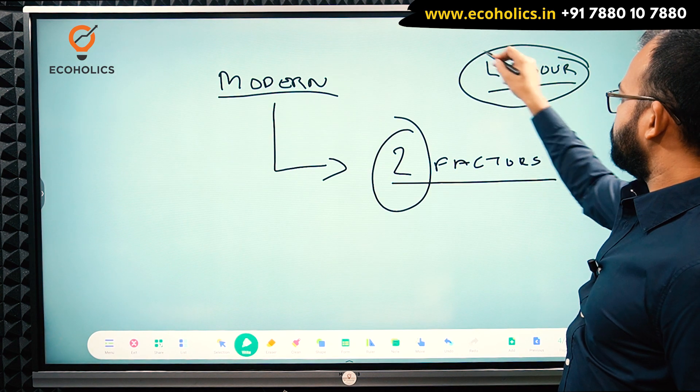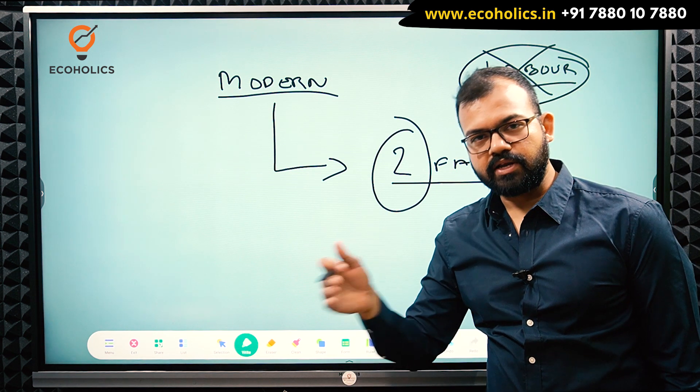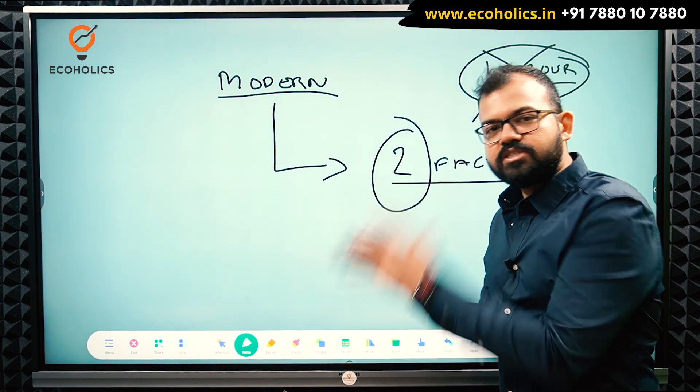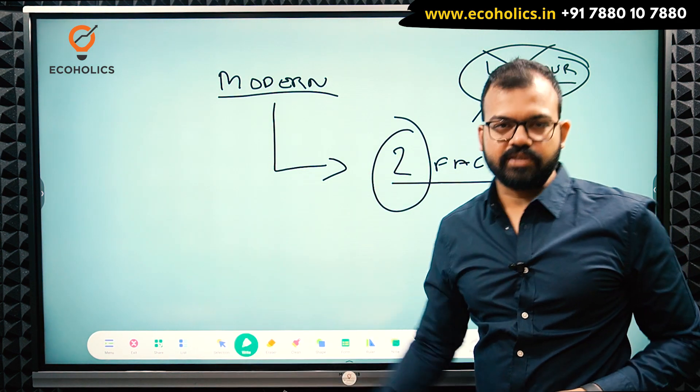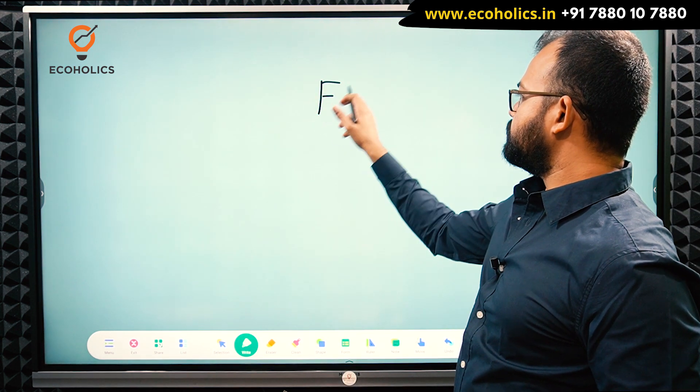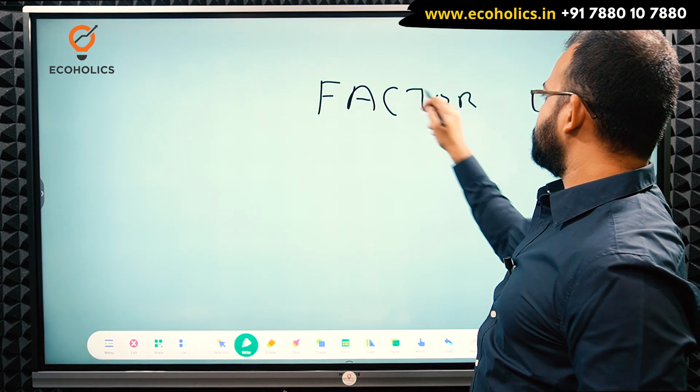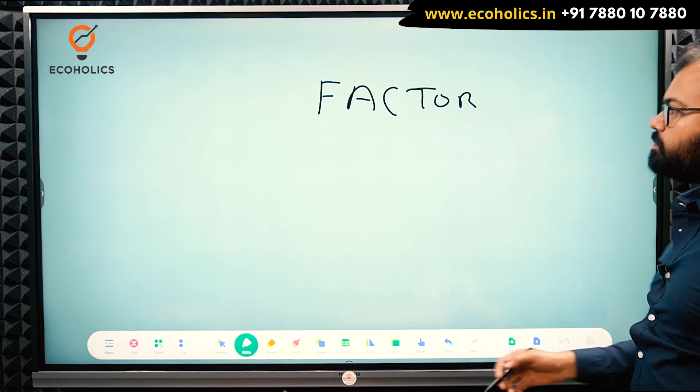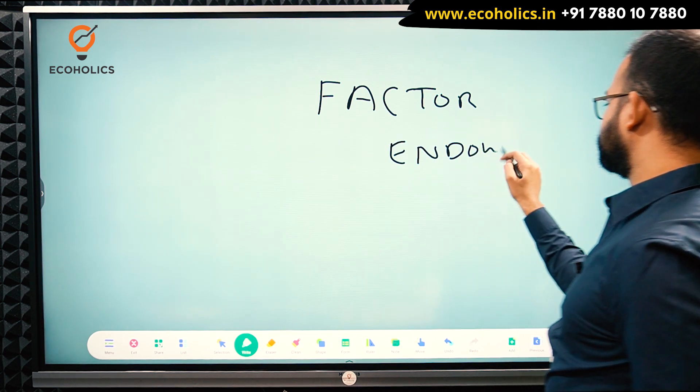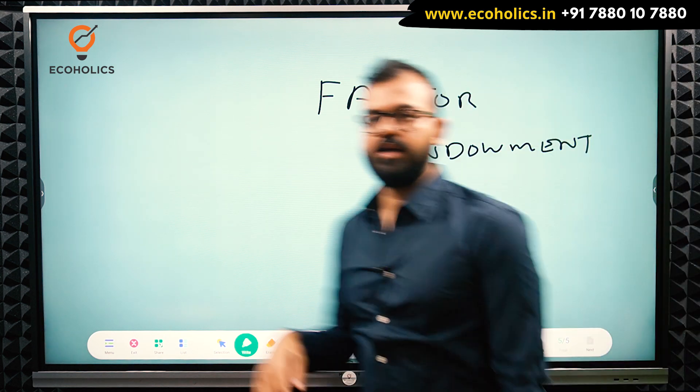It was not based on the labor theory of value. The Heckscher-Ohlin model is not only based on labor theory. Ricardo said that how much labor you are putting into it will decide the price of the commodity. But it is not just labor only, said Heckscher-Ohlin. That's a major improvement. He said that any country engaging in trade, the trade will be based on factor endowment.